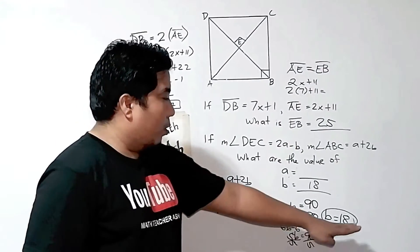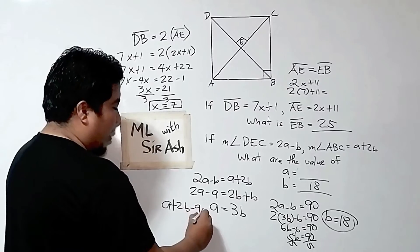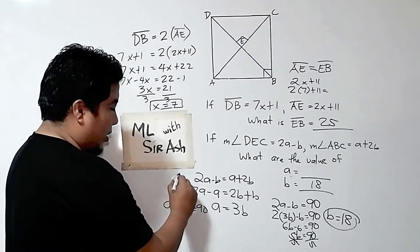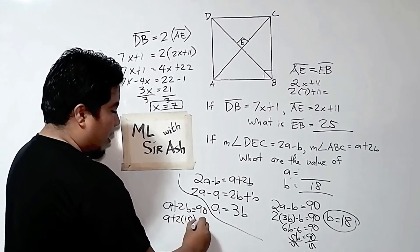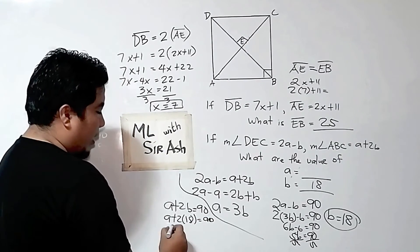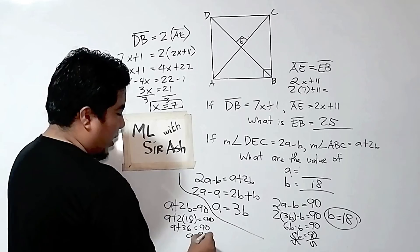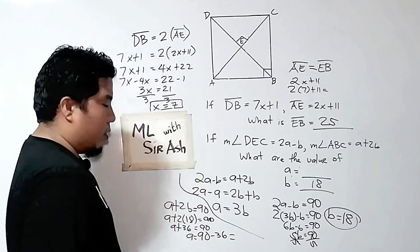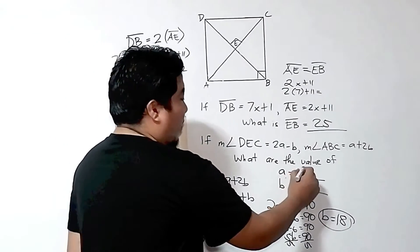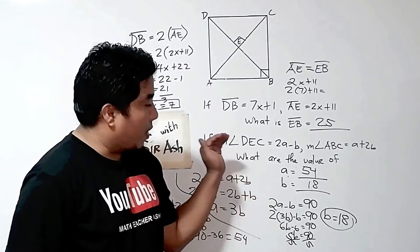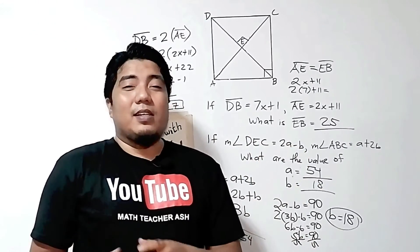How about A? Since we already have the value B equals 18, we can use that in the other expression: A plus 2B equals 90. Substituting B equals 18: A plus 2 times 18 equals 90, so A plus 36 equals 90. Transposing 36 gives A equals 90 minus 36, and the answer is 54. Therefore, A equals 54 units, and that solves our problem in this given figure.